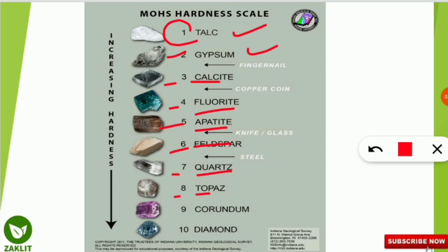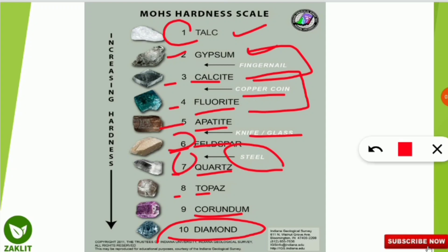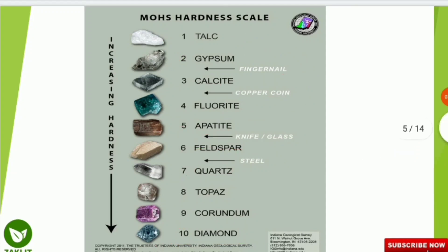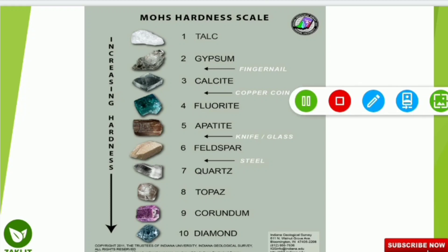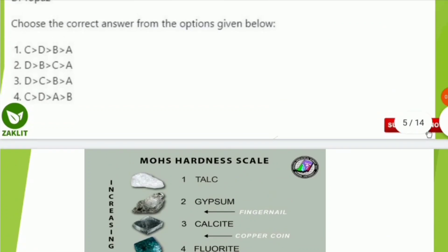Continuing the Mohs scale: quartz is 7, topaz 8, corundum 9, and diamond has the highest hardness of 10. In between gypsum and calcite (2 and 3), a fingernail falls; between calcite and fluorite (3 and 4), a copper coin falls; knife and glass fall between apatite and feldspar; and steel falls between 6 and 7 on the Mohs hardness scale.